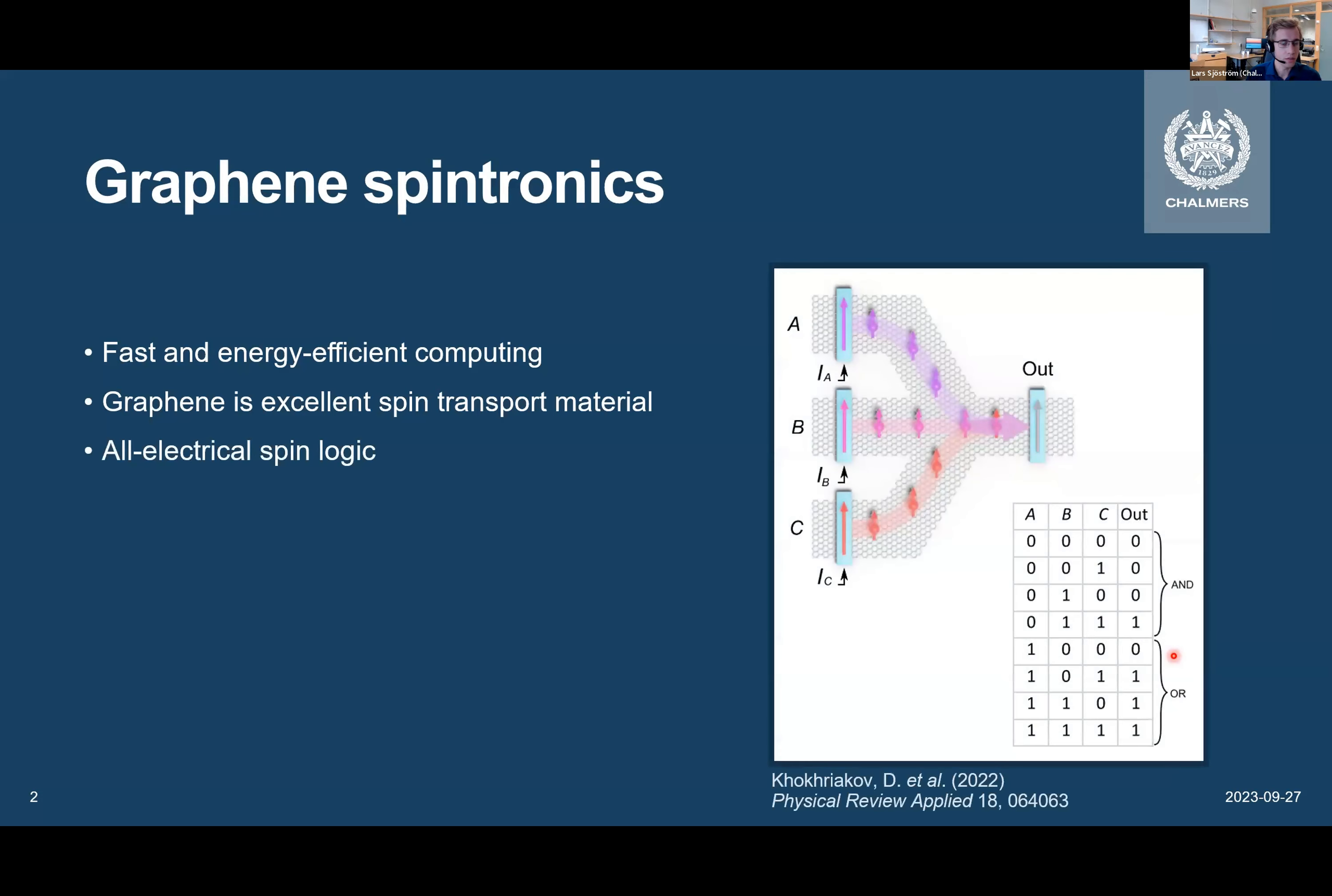There has been some progress by previous members of our group in terms of spintronic logic components. This, for example, is a graphene spin majority gate device, which consists of three ferromagnetic contacts as inputs and one contact as output. So each of these contacts will be injecting spin into the graphene, and spin polarity will be dependent on the sign of each of these currents. So spin will be injected, and then the sum will be detected here, and depending on the configuration of these inputs, it will be working either as an AND or an OR gate.